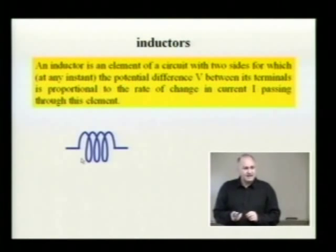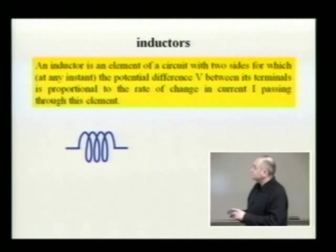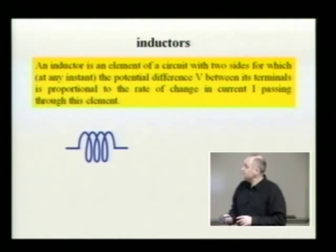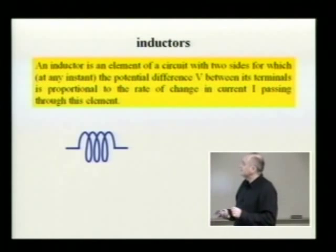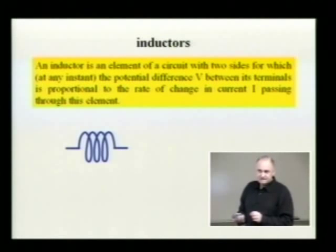An inductor has two sides, and the potential difference between those two sides is proportional to the rate at which the current passing through the element varies.